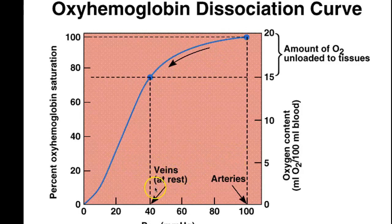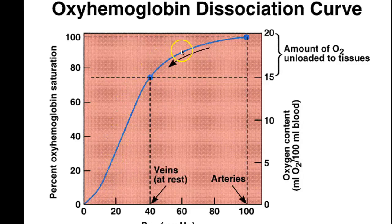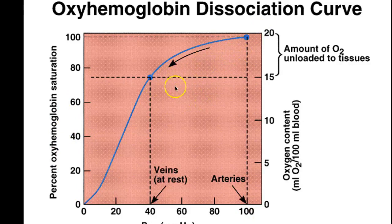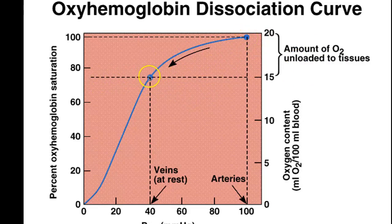Two things to point out. One is that the veins at rest have around a partial pressure of oxygen of 40 — and that is actually the turning point where the slope goes from very steep to less steep. The arteries are around 100, way up at the top where you have almost 100% oxyhemoglobin saturation. The only difference between veins and arteries represents the amount that can be unloaded to tissues — if arteries come in at 100% and veins are at 75-80%, then you're only unloading that 20-25% to tissues.